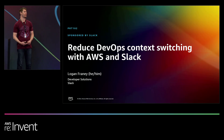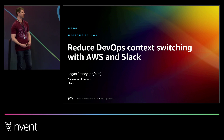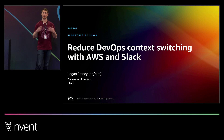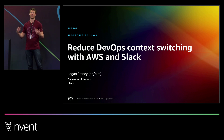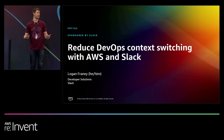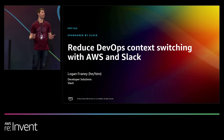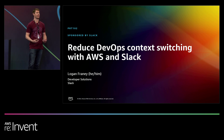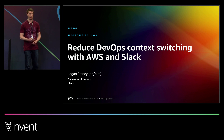We are going to talk about reducing context switching through DevOps use cases. We're going to talk about how to think about Slack and how to continue to use it and get more value out of it. And then we're going to get into all the integrations with AWS and a lot of the use cases and the value that our customers have seen and how you can really make the most of it as well.